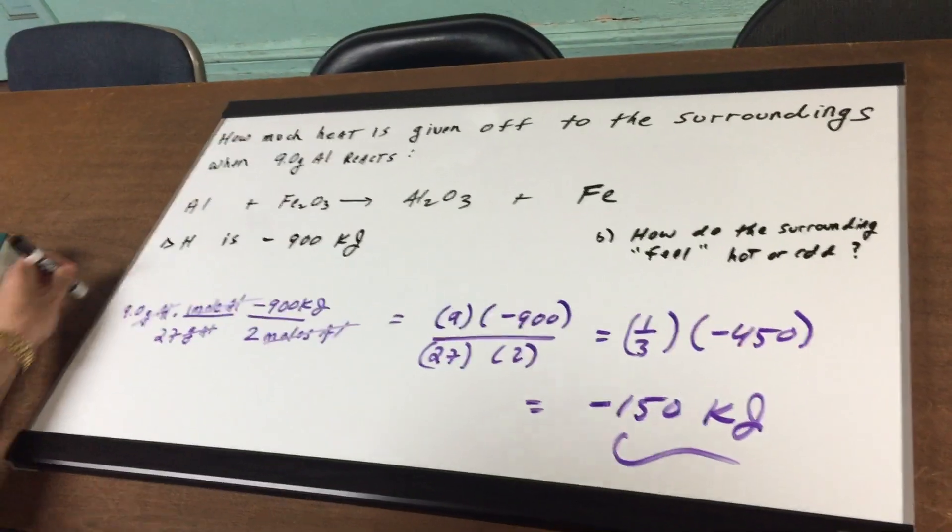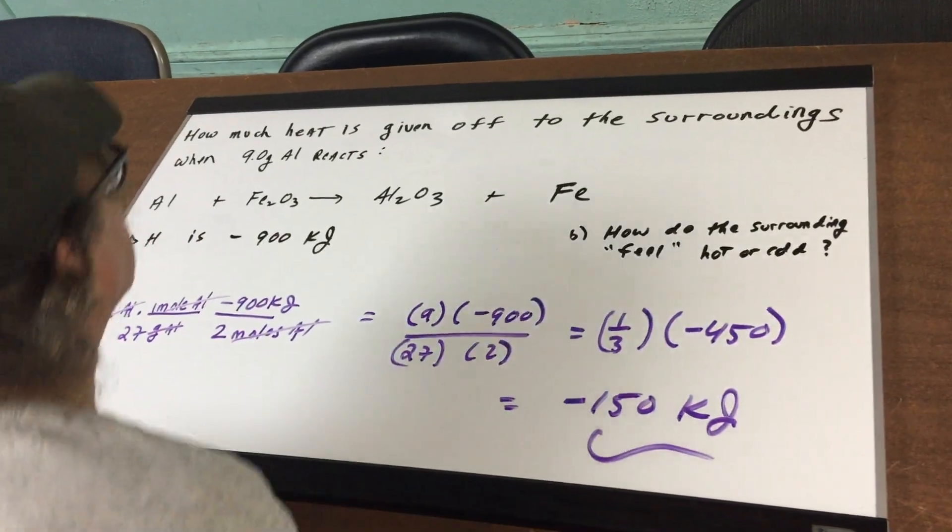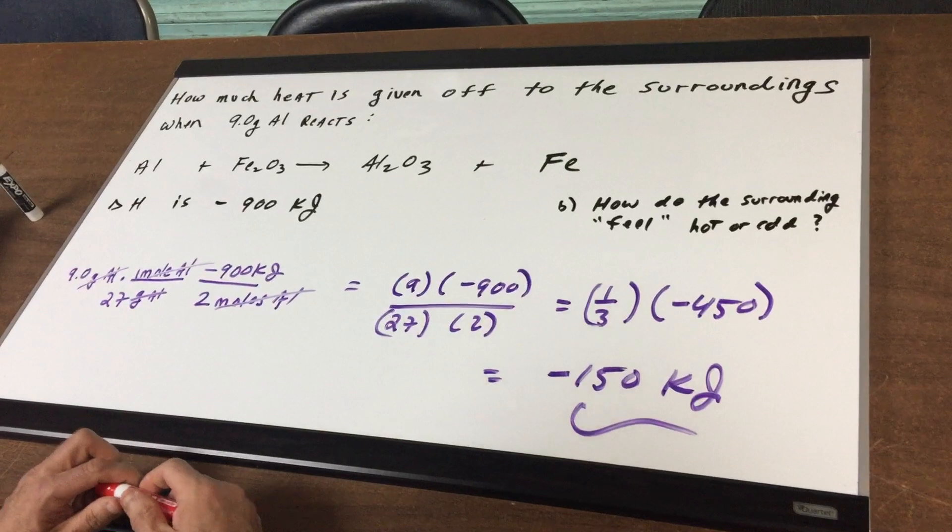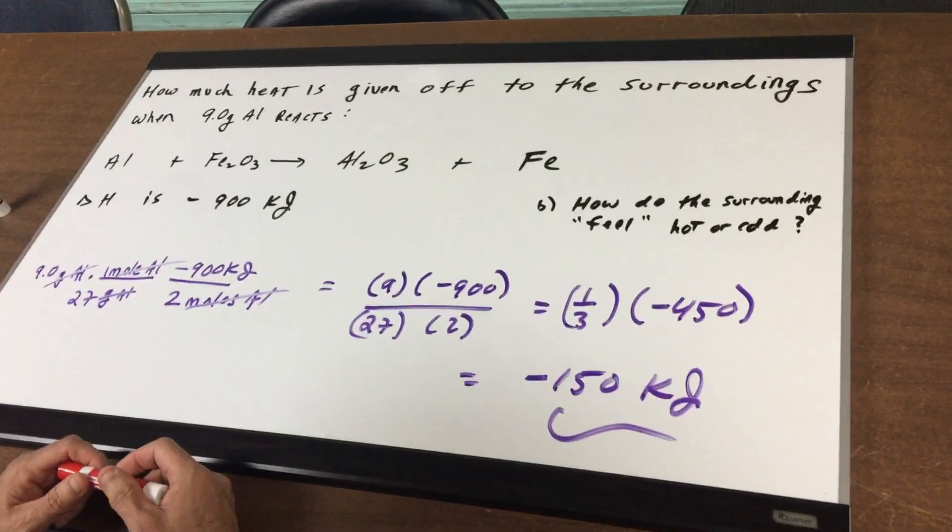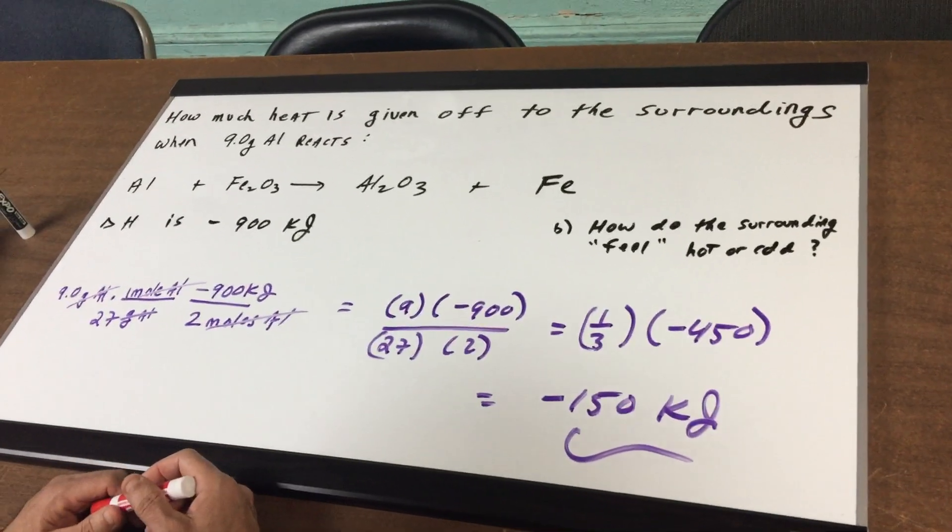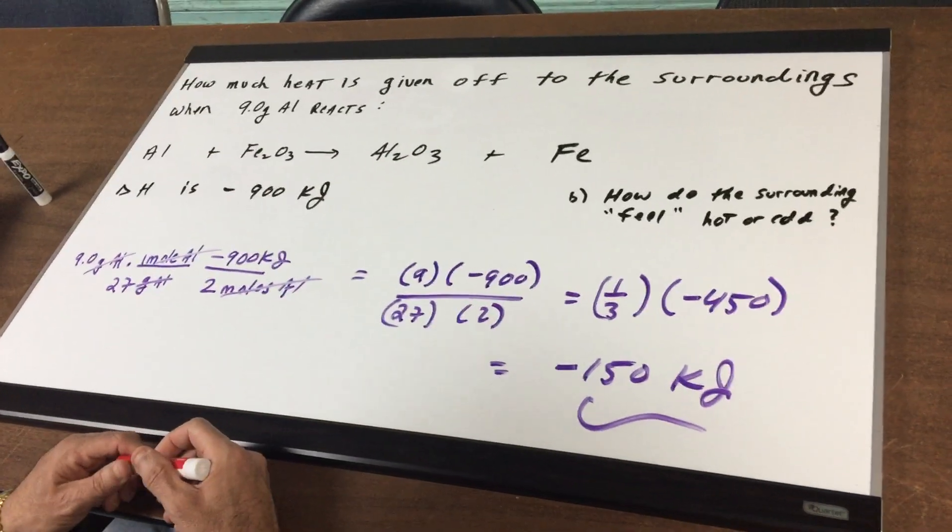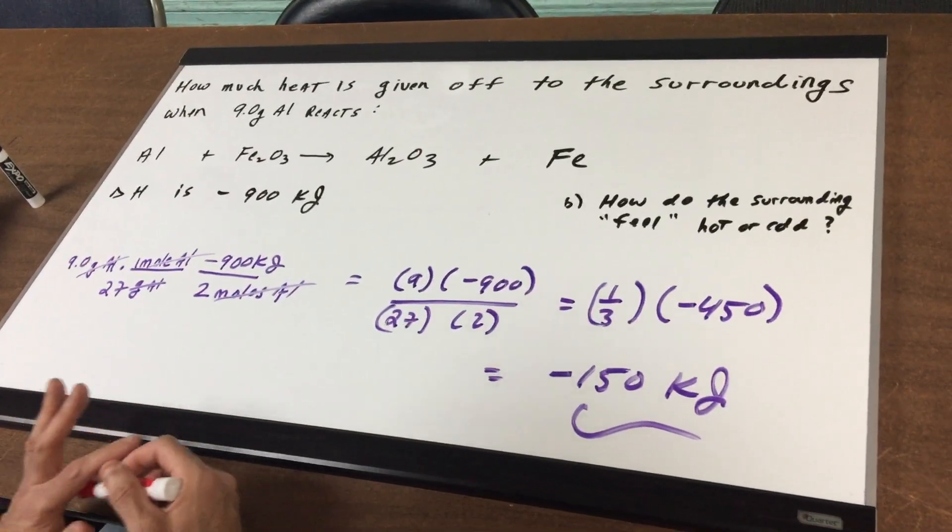In our new issue of the Destroyer, I have a lot of these type of questions, so you really want to make sure you can do these quickly. How much heat is given off to the surroundings when 9 grams of aluminum reacts? And I give you the equation, this is a single replacement reaction.